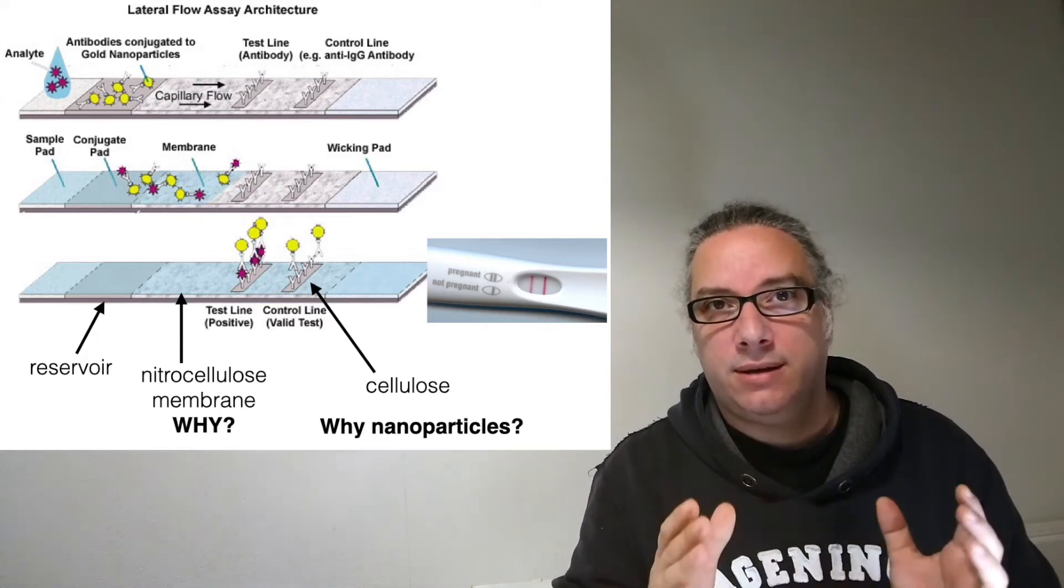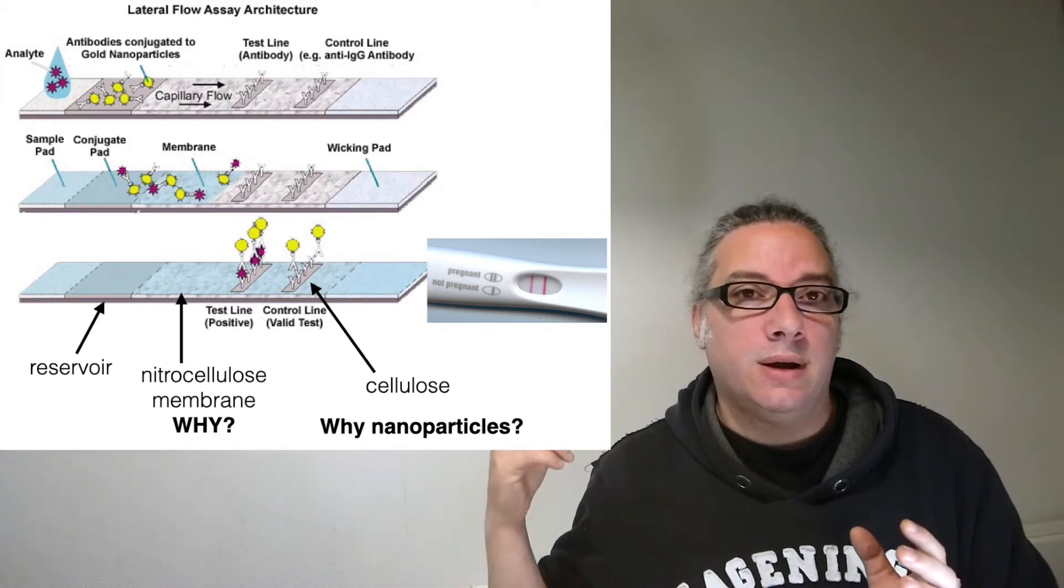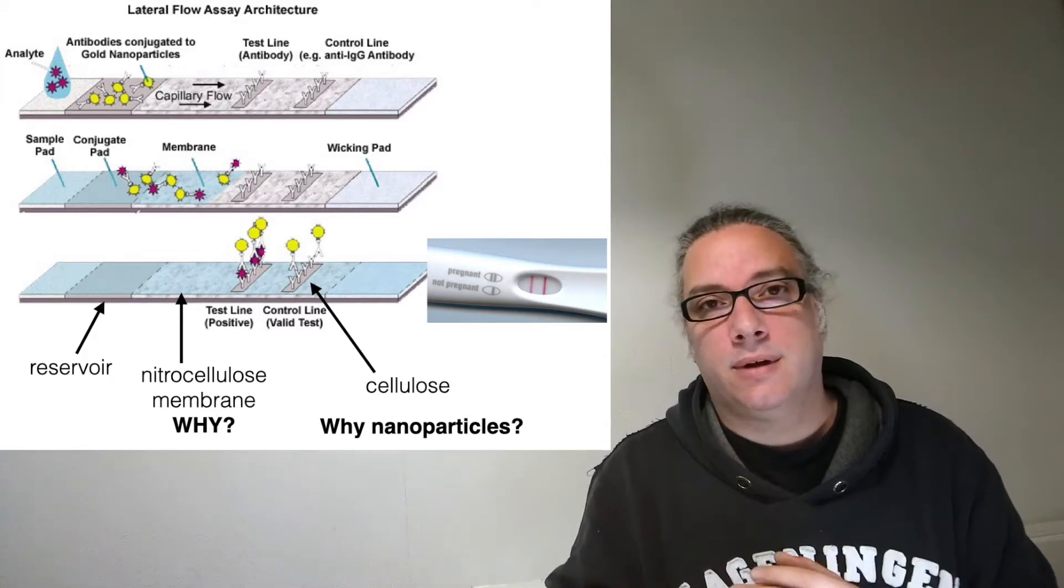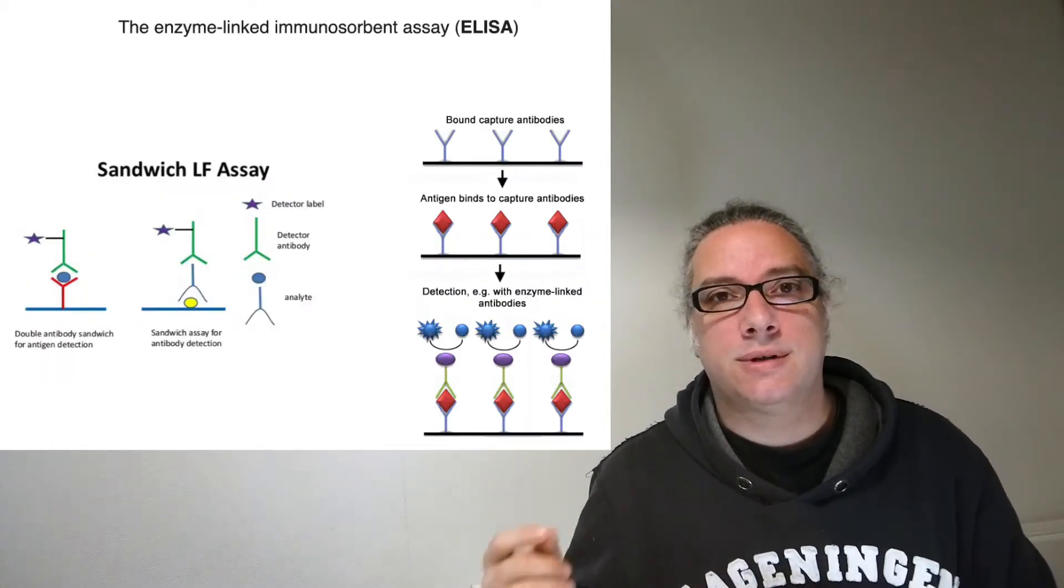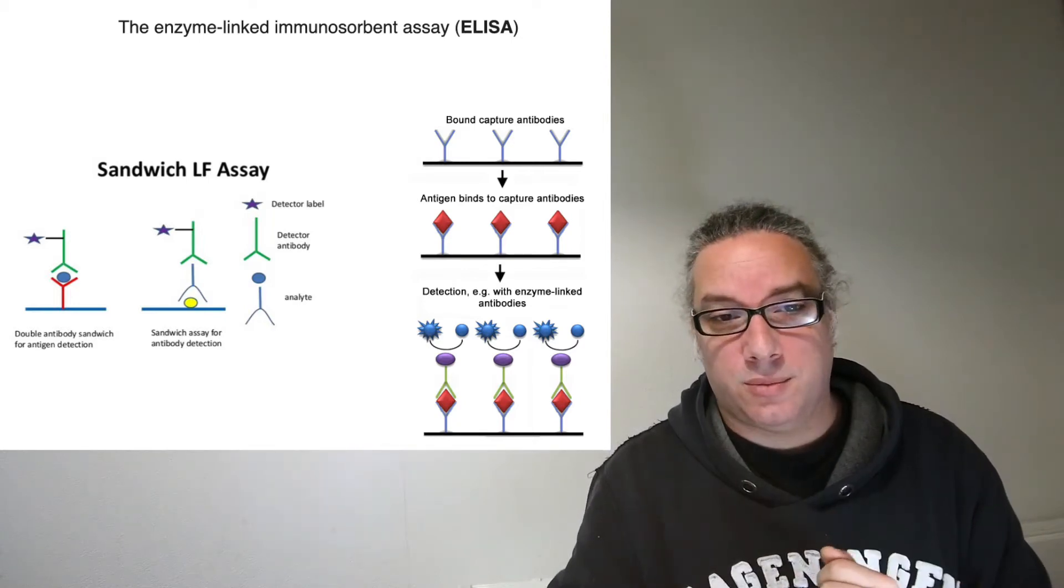You can already see here that it works using many different parts in the paper. It usually uses nanoparticles and the chemical mechanism is called ELISA, the enzyme-linked immunosorbent assay.